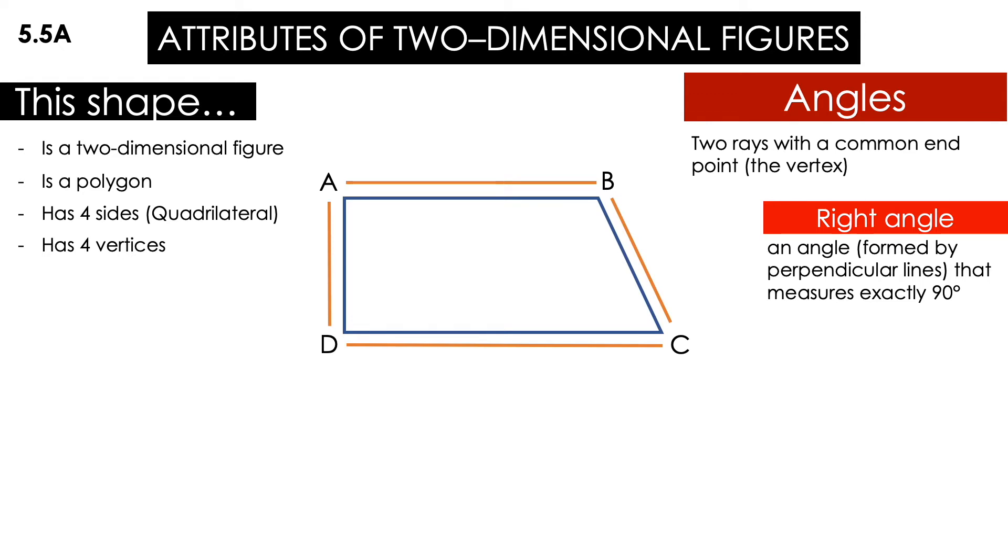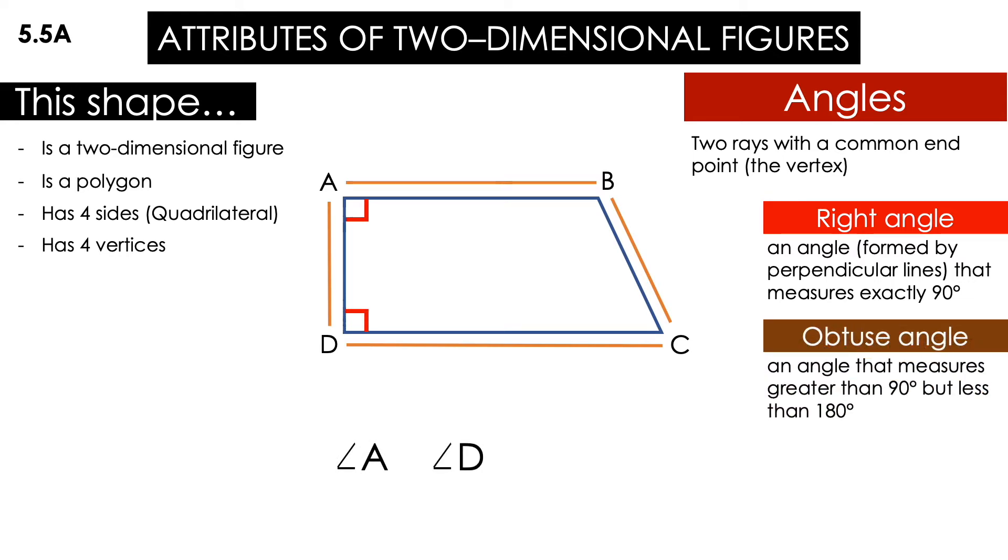Which one of these measures exactly 90? A, B, C, or D? Yes, we have A and also we have D. Those are right angles. Now, let's talk about an obtuse angle. This is an angle that measures greater than 90 but less than 180. Which one would that be?